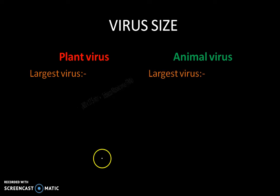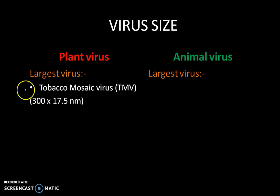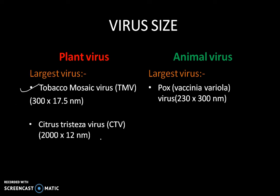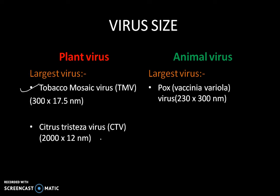The largest plant virus is regarded as the tobacco mosaic virus, which is also the first plant virus to be discovered. The largest animal virus is the poxvirus, that is vaccinia and variola virus. Another large plant virus present is the citrus tristeza virus.